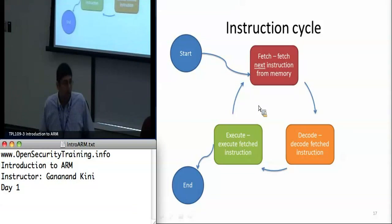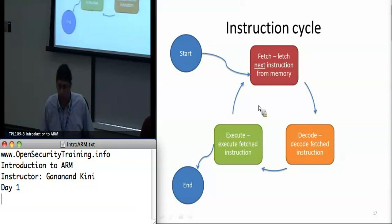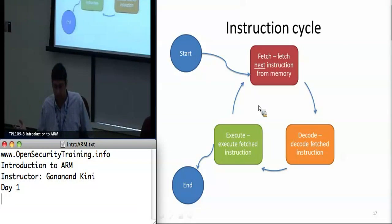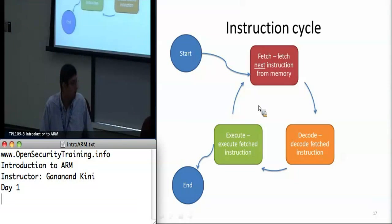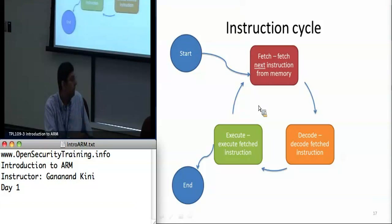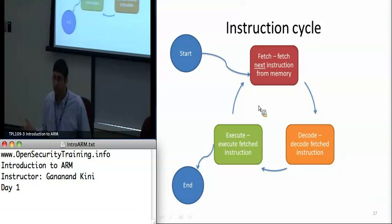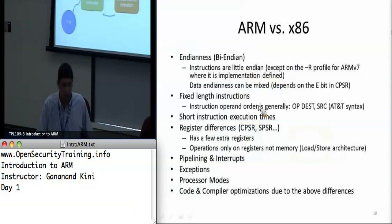The processor has three stages in its instruction cycle: fetch, decode, and execute. This ties into a unique ARM feature called pipelining, which allows queuing up multiple instructions. While one instruction is executing, the processor can simultaneously be decoding another and fetching a third. We'll see the advantages and disadvantages of this later — for now, it's simply fetch, decode, and execute.